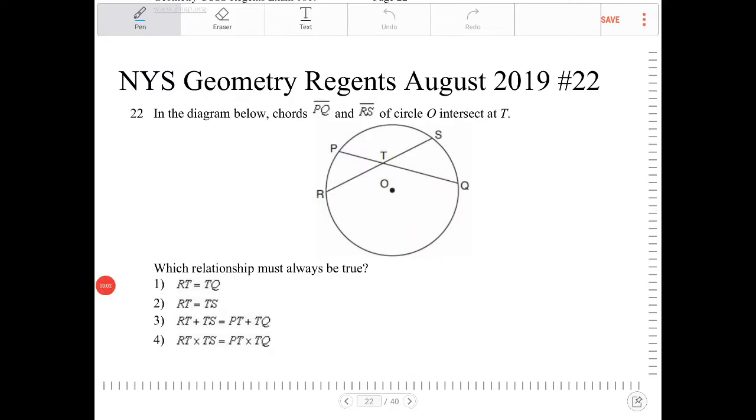In the diagram below, chords PQ and RS of circle O intersect at T. Which relationship must always be true?